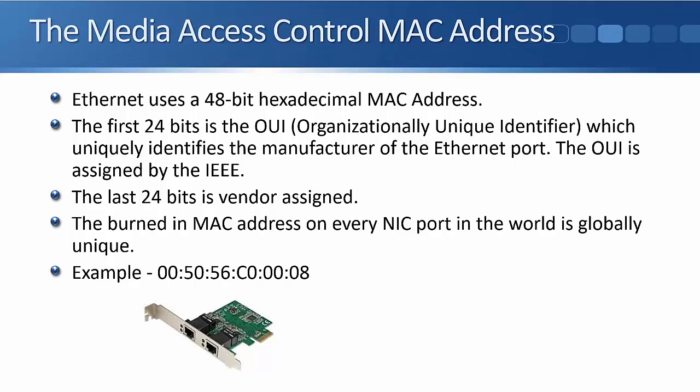If we look back a slide, six bytes, each byte is eight bits, so six times eight gives us 48 bits. The MAC address is split into two different halves. The first half, the first 24 bits, is the OUI, the Organizationally Unique Identifier. That identifies the manufacturer of the Ethernet port. If you've got a Cisco router or switch with an Ethernet port, it will have a MAC address, and the first half of the MAC address is Cisco's identifier.